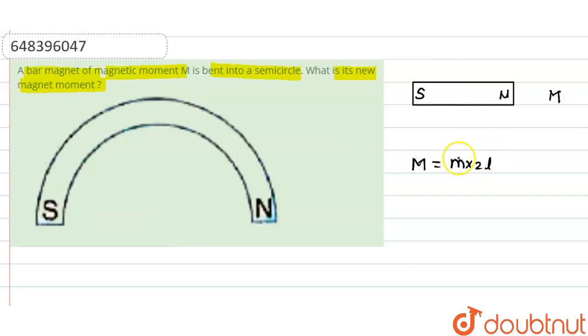where m is the pole strength and 2l is the distance between the two poles. Now the distance between these two poles has changed because the distance between the two poles is